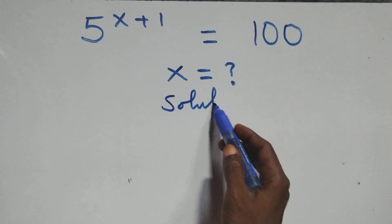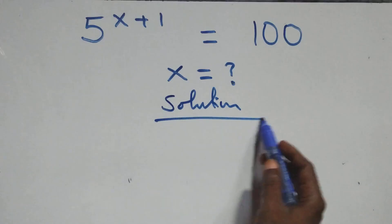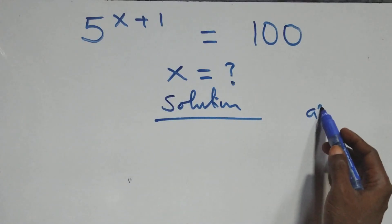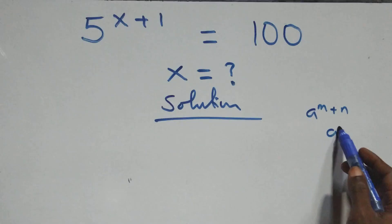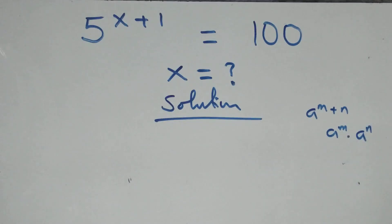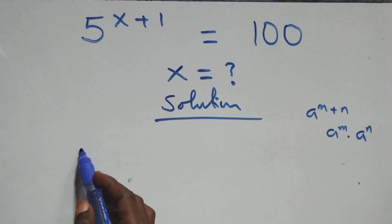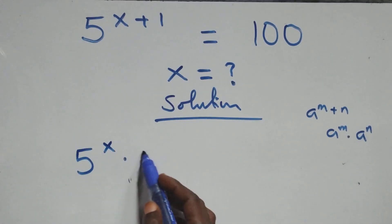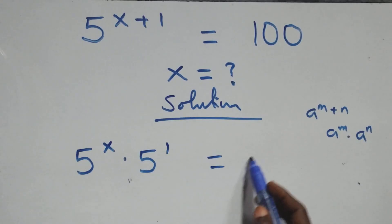Solution from here. What we have here is as follows: when we have a raised to power n plus n, it is the same thing as a raised to power n times a raised to power n. So what we have here can be written as 5 raised to power x times 5 raised to power 1 equals to...